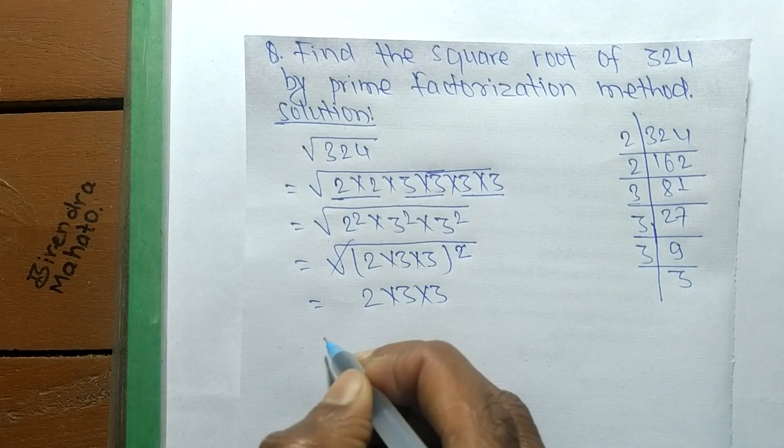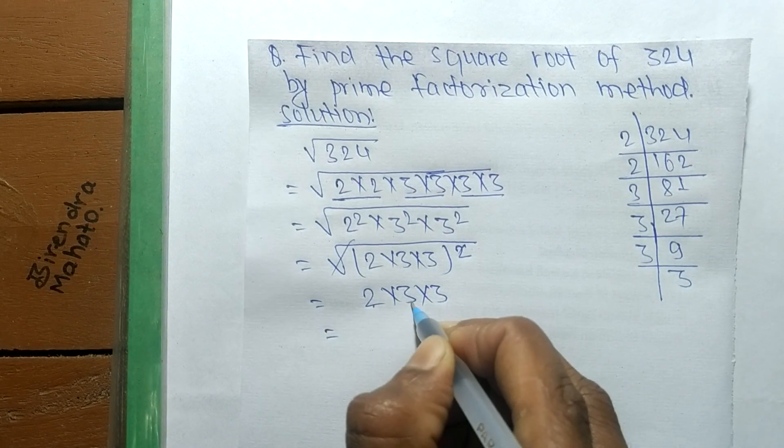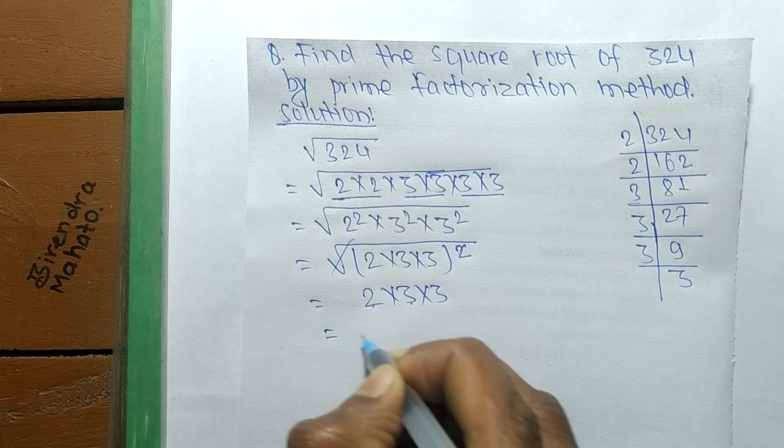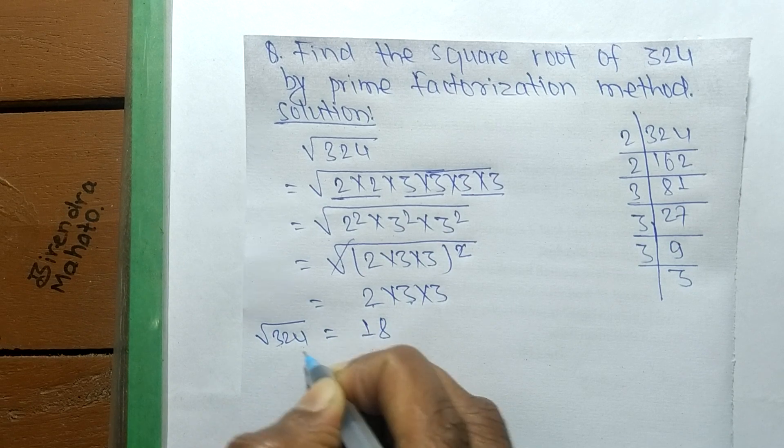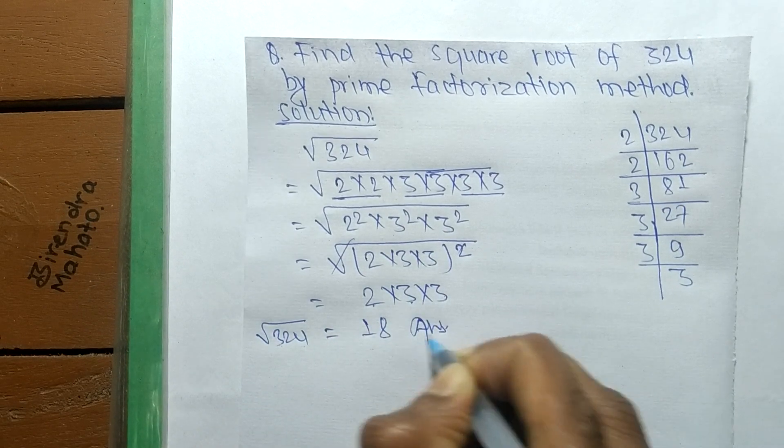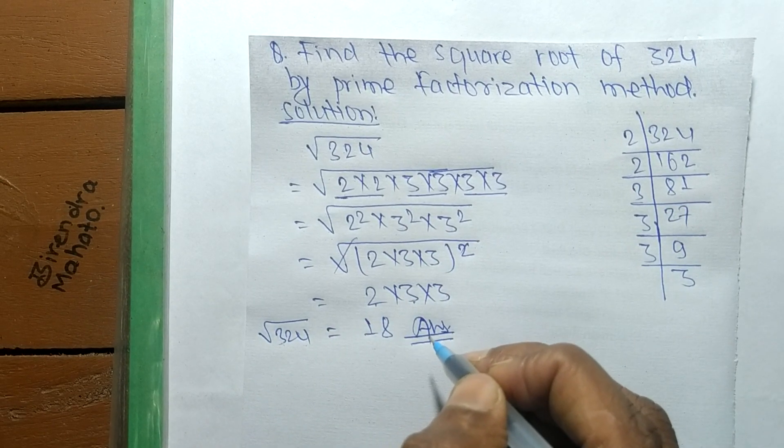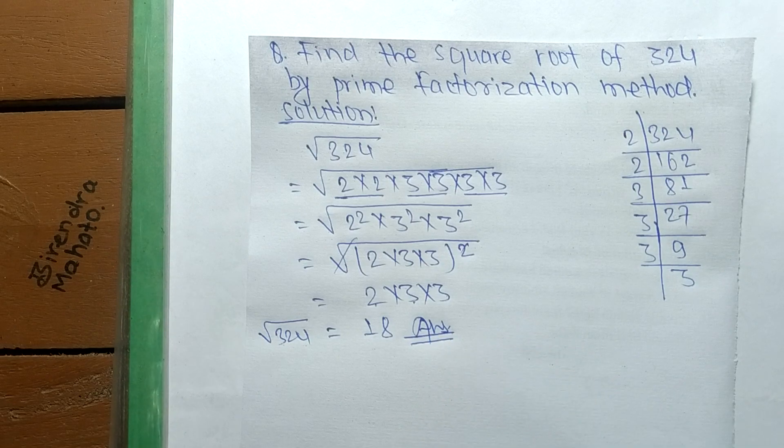The product of these numbers is 2 × 3 = 6, and 6 × 3 = 18. So the square root of 324 is equal to 18. Thanks for watching.